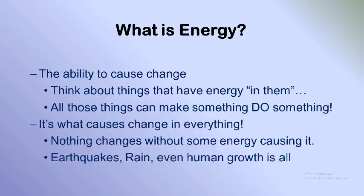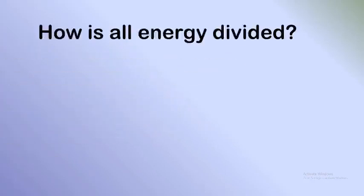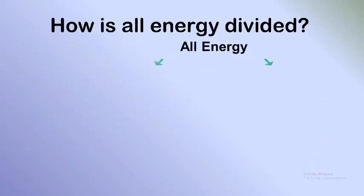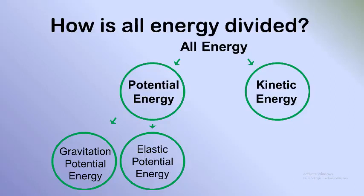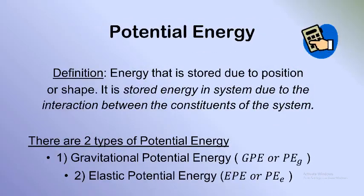Energy is what causes change in everything — earthquakes, rain, even human growth. We have two types of energy: kinetic energy and potential energy. Potential energy itself has two forms: gravitational potential energy and elastic potential energy. The word 'potential' means stored, so potential energy is stored energy. This energy may be stored due to position or shape. If stored due to position, it is gravitational potential energy (GPE); if stored due to shape, it is elastic potential energy (EPE).